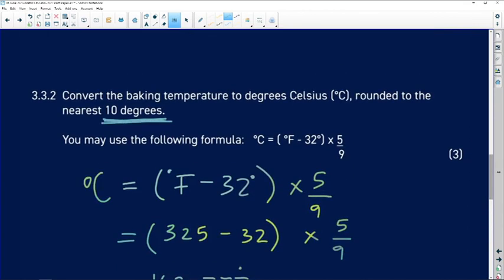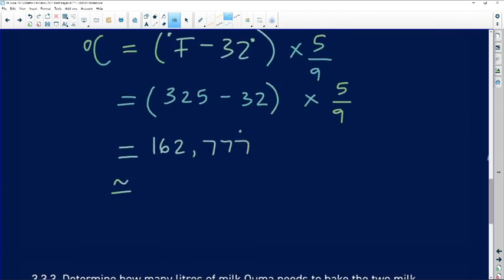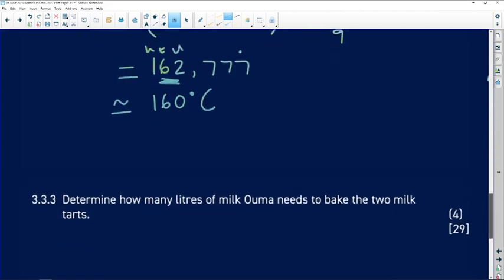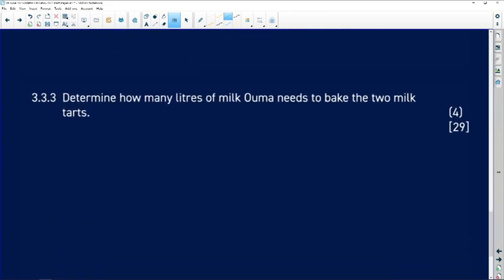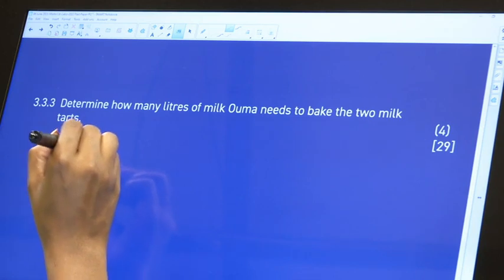However, it says that we need to round it off to the nearest 10 degrees. So this is 10, okay, units, tens, hundreds. So this is closer to 60 than it is to 70, so it's going to be 160 degrees Celsius, because on your stove you can't say comma seven. Determine how many liters of milk Ouma needs to bake the two milk tarts. So we know for one tart...